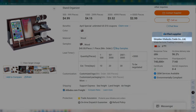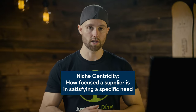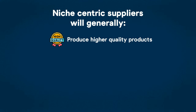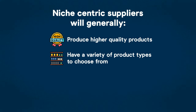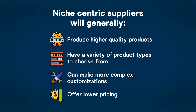Next, click the underlined company name above the classification — this will open the supplier's mini website, which is like an Alibaba profile. Here you want to evaluate the niche centricity of the supplier. It's often best to find a supplier who focuses on your niche rather than one who sells everything, because a niche-centric supplier will generally produce higher quality products, have multiple accessory or bundle components within their catalog, have the ability to make more product customizations, and often offer lower pricing.